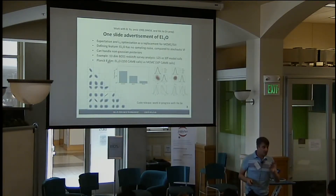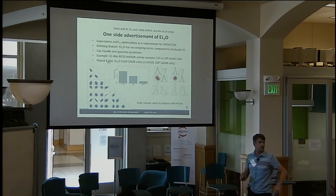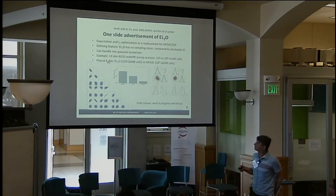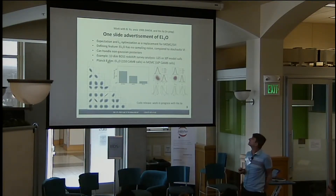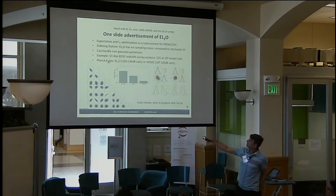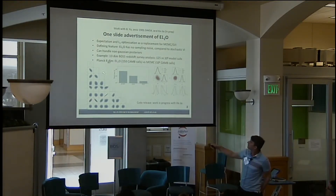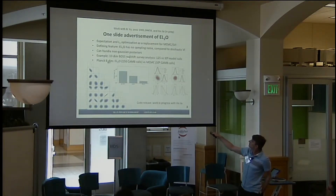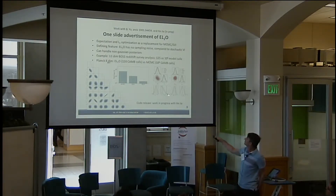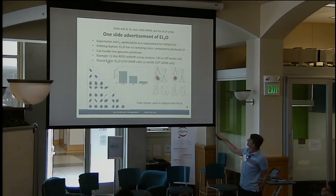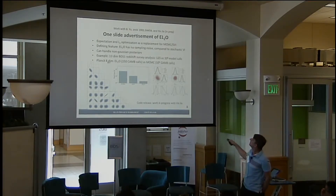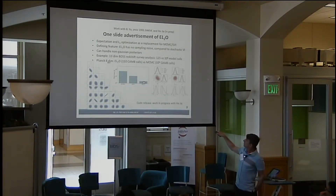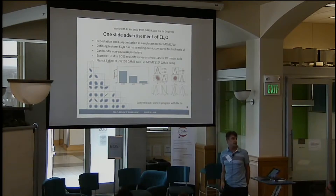Before I proceed, I just want to give one slide of advertising, which is not quite machine learning, but it's a method we are advocating to be a good competitor to Markov Chain Monte Carlo methods. Here is a typical eight-dimensional example of Planck data in cosmology. These are our 1D and 2D posteriors compared to the MCMC. MCMC had a million calls; we had 100 to 150 calls. In a Galaxy Redshift survey data example, we have 125 calls versus again a million calls. Our method is about 10^3 to 10^4 times faster than MCMC.